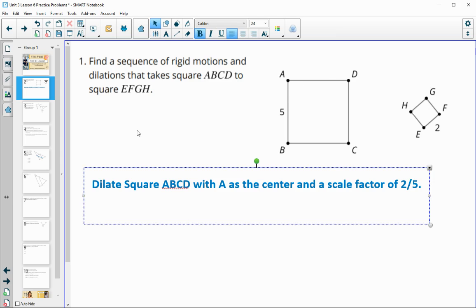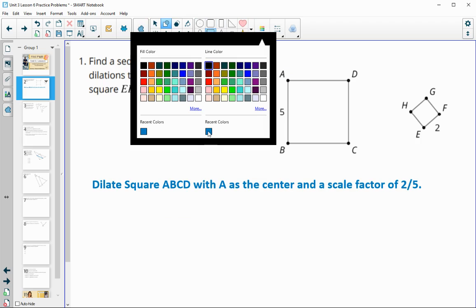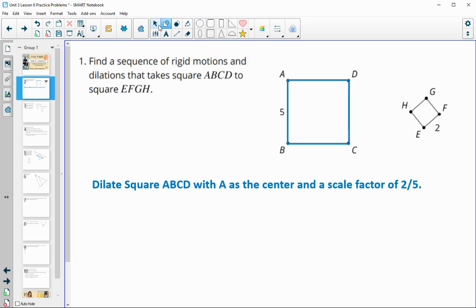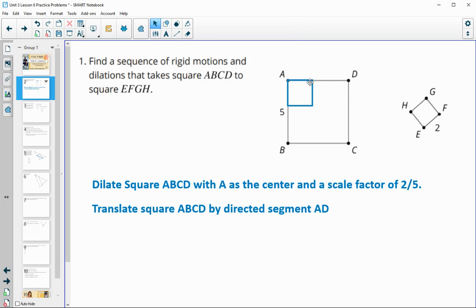Now I'm going to have to start bringing it over and getting it touching the other square. So currently what I've done is just scaled it down so that it's the same size. Now I'm going to get them touching by doing a translation. So I'm going to translate square ABCD by directed line segment AE, which will get us here.